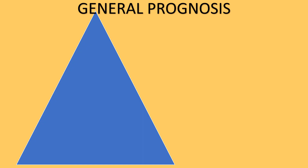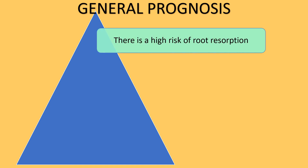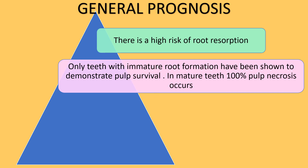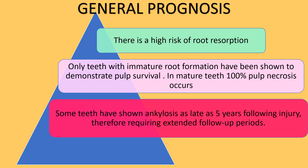The general prognosis for such teeth is that there is a high risk of root resorption. Only teeth with immature root formation have shown pulp survival. In mature teeth, 100% pulp necrosis occurs. Also, some teeth have shown ankylosis as late as 5 years following injury, therefore these teeth require extended follow-up periods.